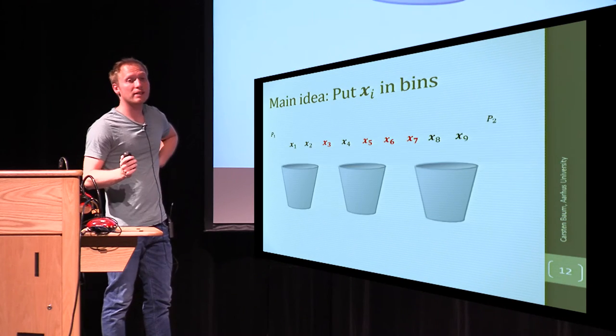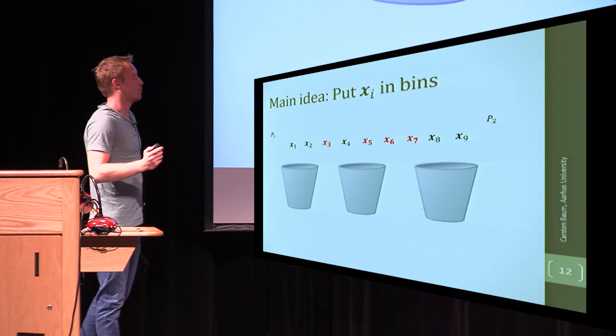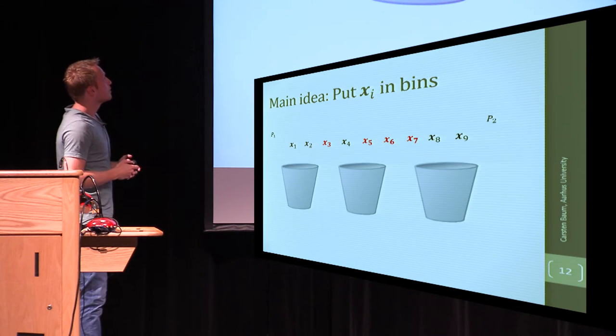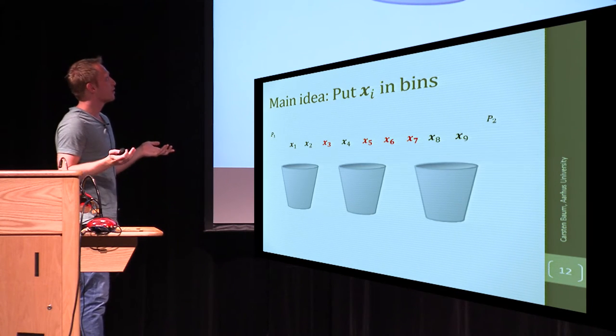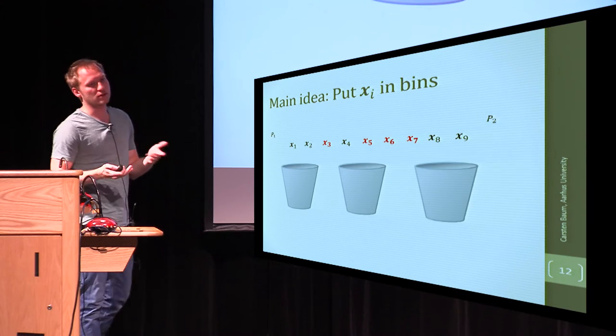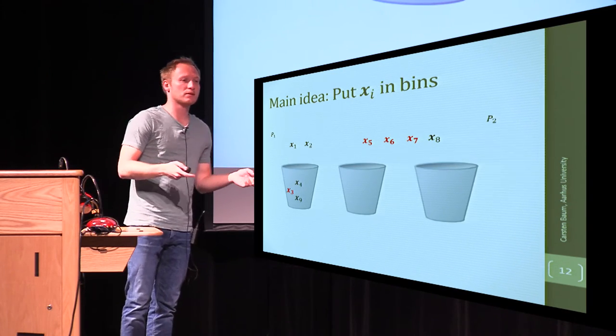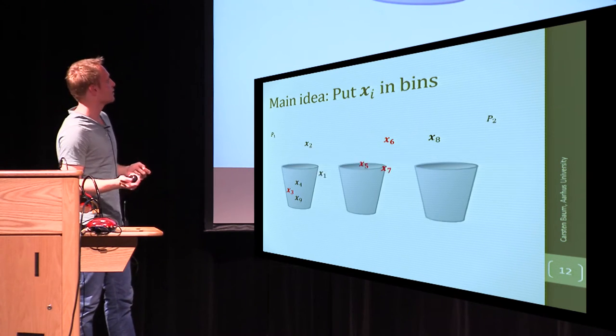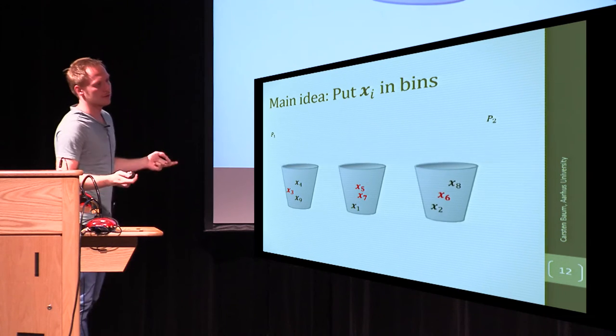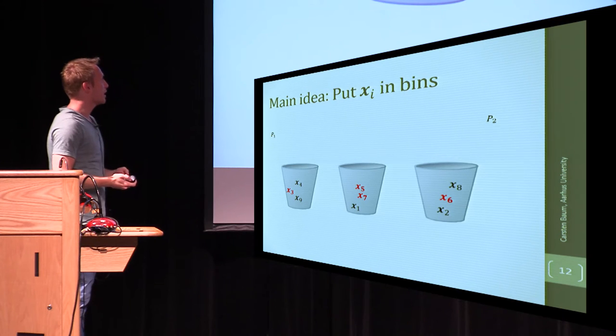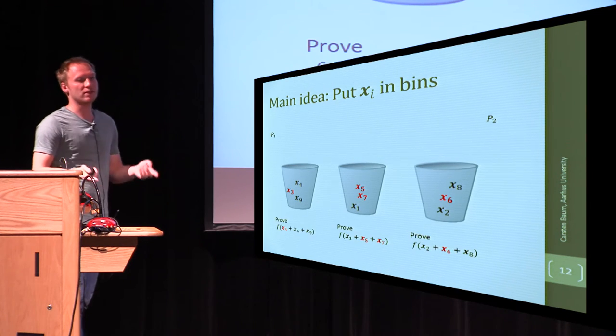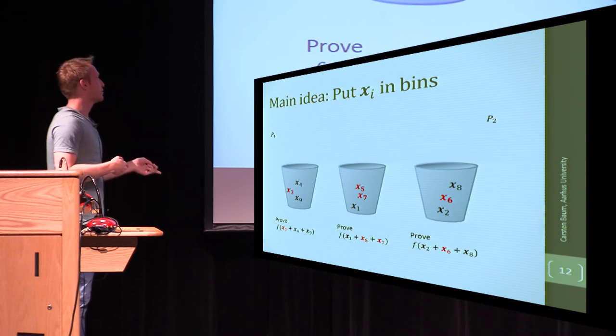So, why do we hope that this works? Or what is the intuition behind that? The intuition is to, let's look at this from a balls and bins perspective. Let's say the verifier says, the prover puts these values into the first bin, these values into the second bin, and these values into the third bin. And then, prove me knowledge of the sum of all of these values, right?